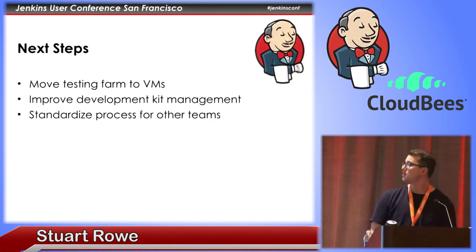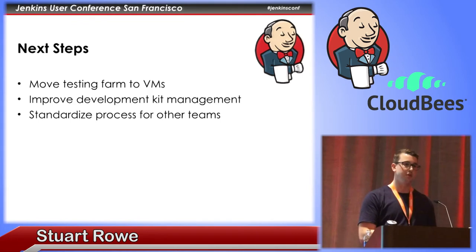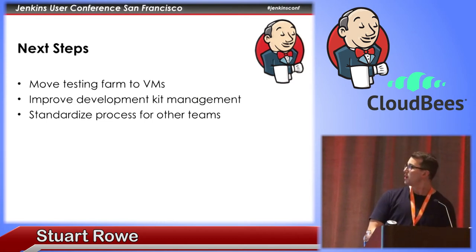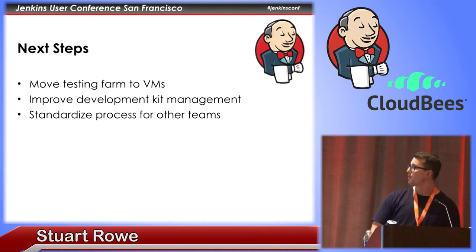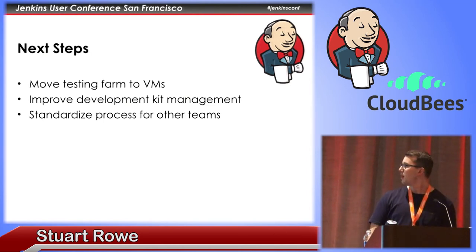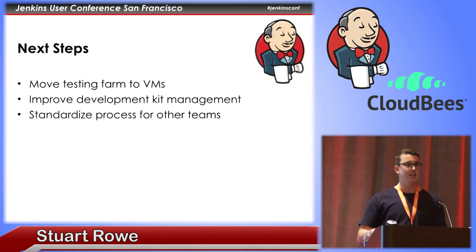Moving forward, we'd like to move our farm from physical desktop PCs to VMs for stability. Our previous system had a problem with dev kit management where we were assigning one dev kit to one build machine. We're looking at ways to create a resource pooling system for allocating and provisioning dev kits as necessary. We also want to standardize our process so other teams beyond just the FIFA gameplay team can use this system for their pre-flight testing.